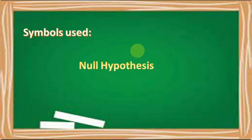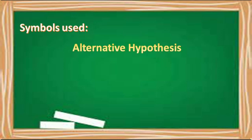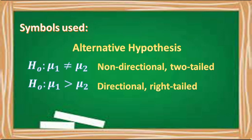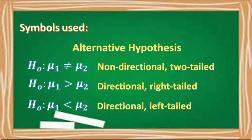For the null hypothesis, we'll be using the symbol mu sub 1 is equal to mu sub 2, meaning the two means are equal or the parameters are equal. And for the alternative hypothesis, we'll be using mu sub 1 is not equal to mu sub 2 when it is non-directional and it is a two-tailed. We'll be using mu sub 1 is greater than mu sub 2 when it is directional and it is a right-tailed. And we'll be using mu sub 1 is less than mu sub 2 when it is directional and it is a left-tailed.